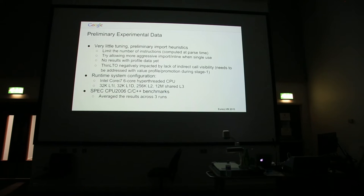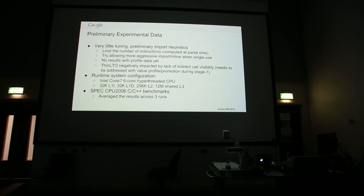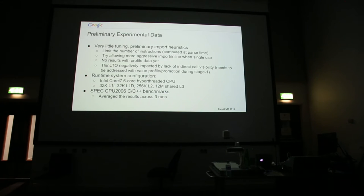Some caveats on performance data: I've done variable tuning — most of the work I've been doing is implementing the framework. Right now for importing decisions, I'm limiting to small functions. I've also tried allowing more aggressive importing and inlining when there's a single use. I haven't tried using profile data yet, and it's negatively impacted by the fact that there's no indirect call profiling and promotion in stage one. I ran these on six-core Core i7s, locked, ran three times, and took the average.